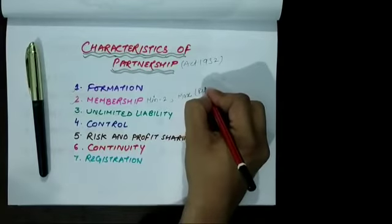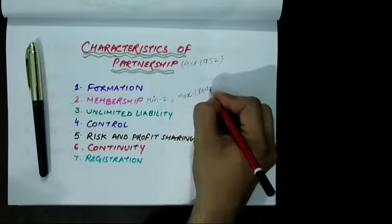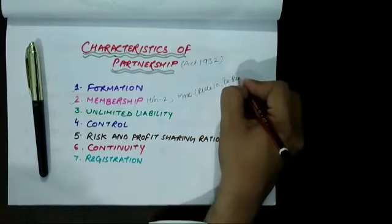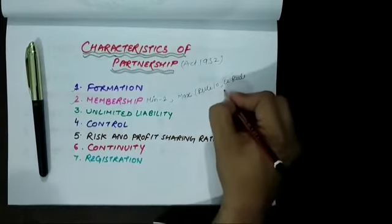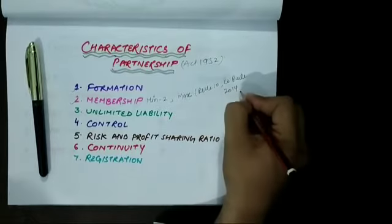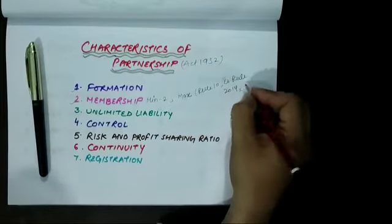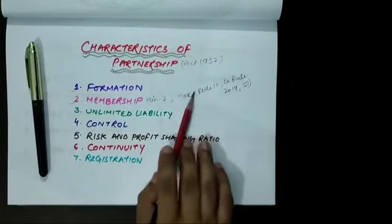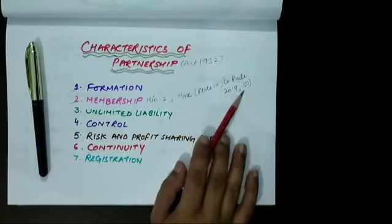As per Rule 10 of Company Rule 2014, the maximum number of partners can be 50. Maximum 50 partners can be there in a partnership.